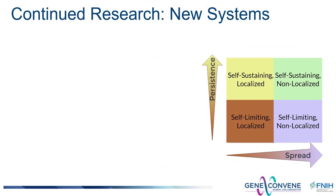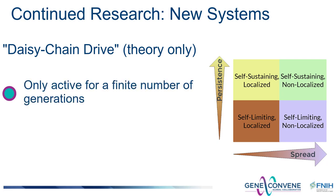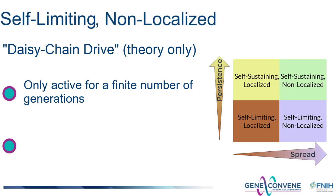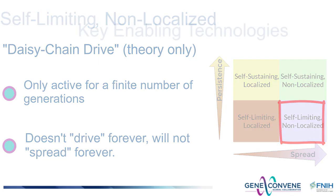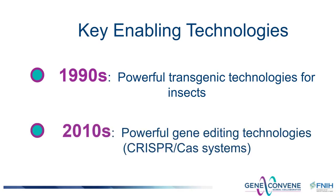There continues to be active research in new genetic biocontrol technologies with new and useful persistence and spreading characteristics. One hypothetical design referred to as daisy chain is a gene drive system with a crude timing device that can be set to limit the number of generations the system remains active. These systems could be self-limiting and non-localizing and capable of spreading. The widespread availability of transgenic technologies applicable to insects at the end of the 20th century created opportunities for new engineered genetic biocontrol systems. The advent of powerful genome modification technologies based on RNA-guided DNA endonucleases such as Cas9 from Streptococcus pyogenes in the early 21st century have further enhanced those opportunities and have made the creation of powerful engineered gene drive systems technically feasible.